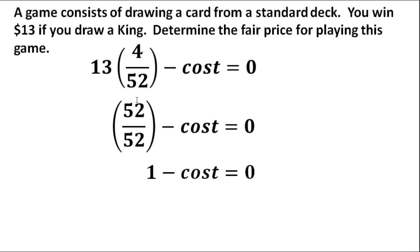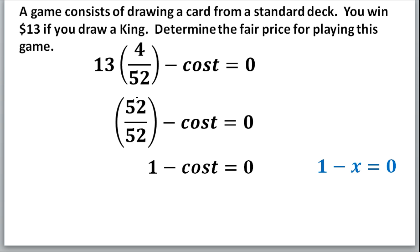Now we've got the cost as our unknown. When we're dealing with unknowns in algebra, we usually use an x. So if we think about it in these terms, 1 minus x equals 0.